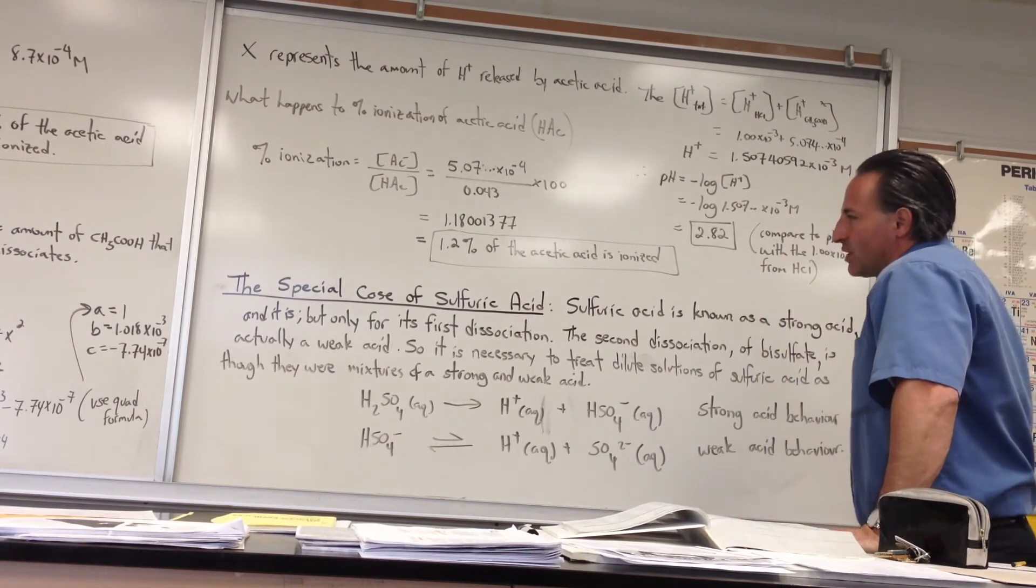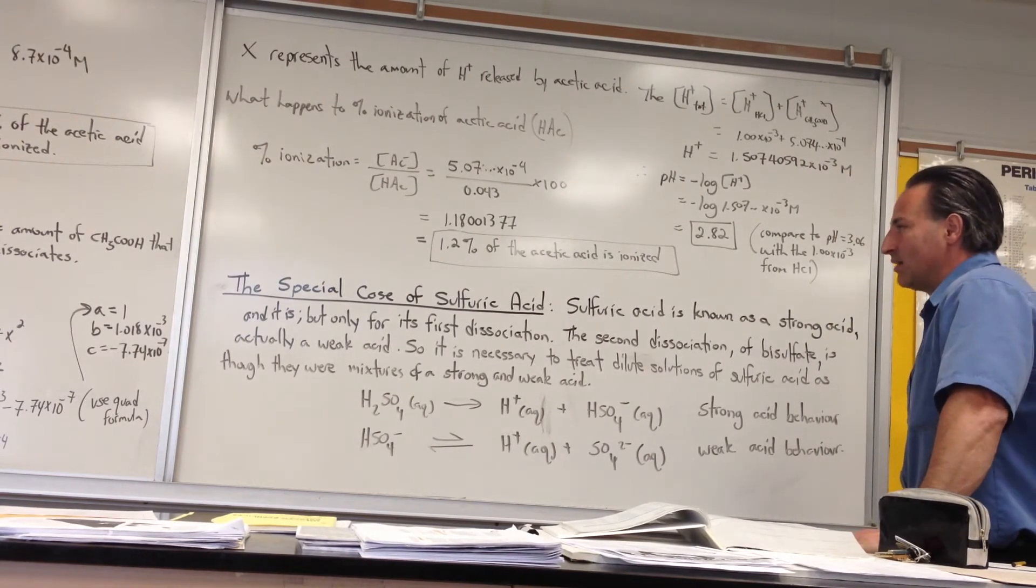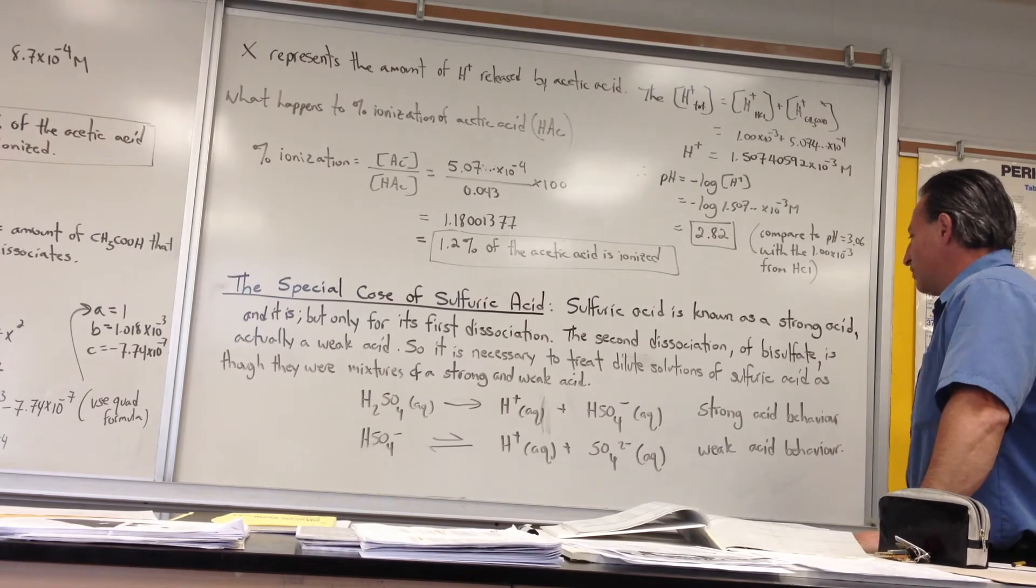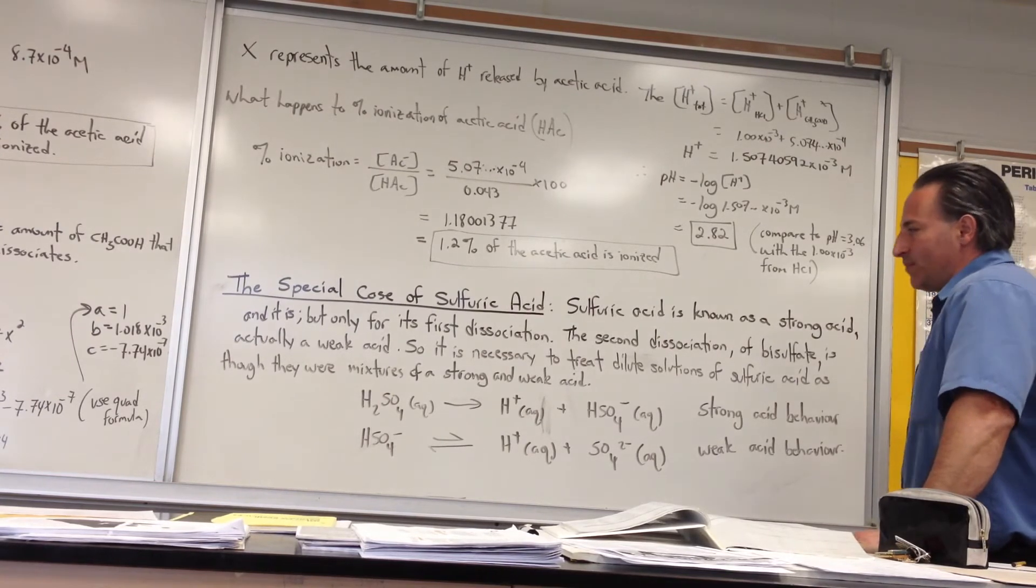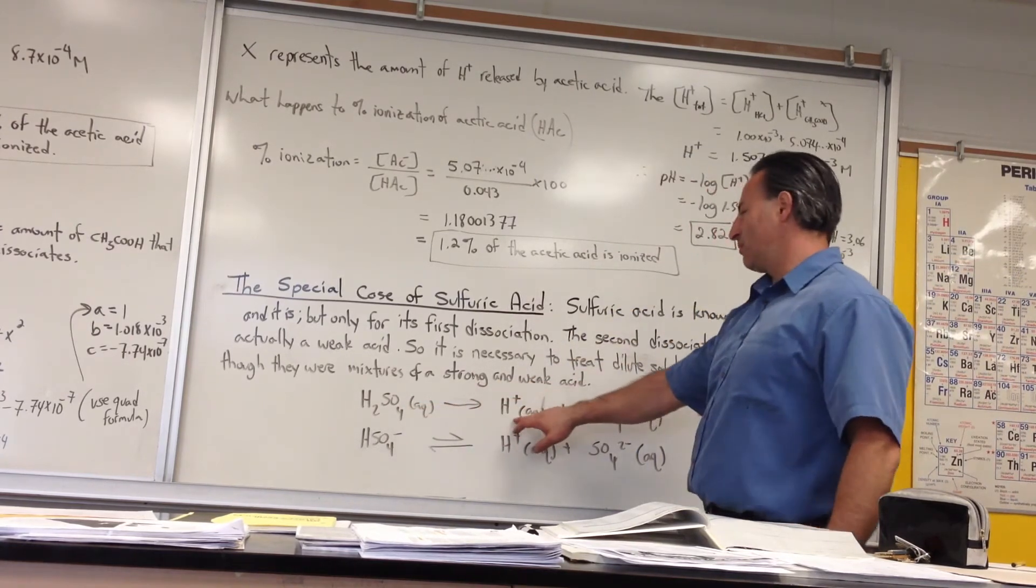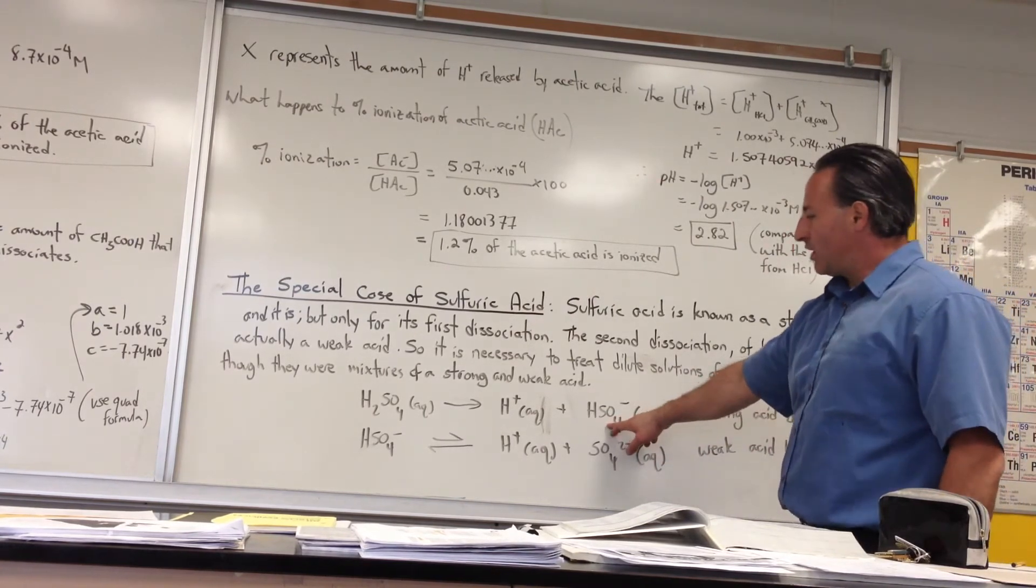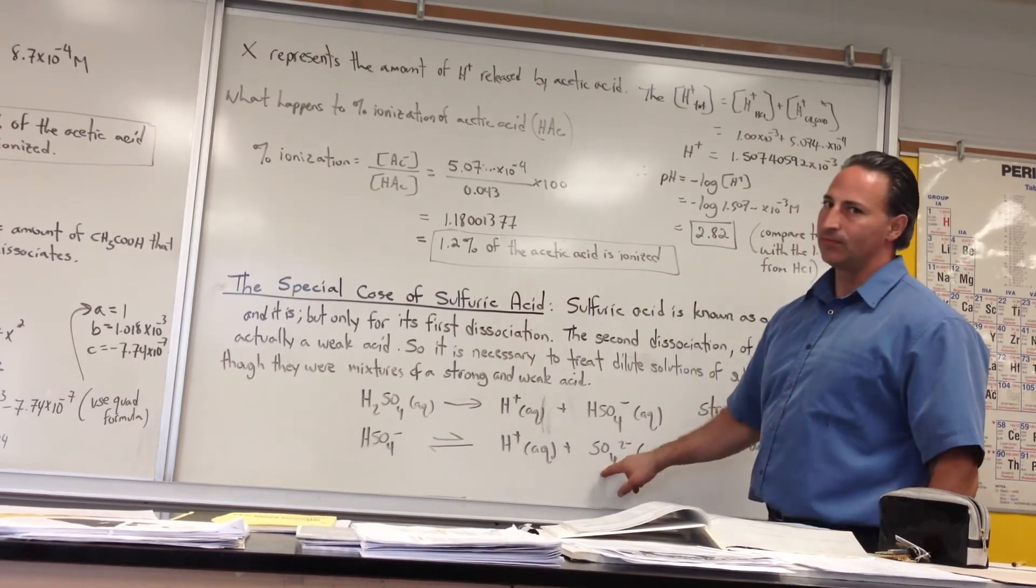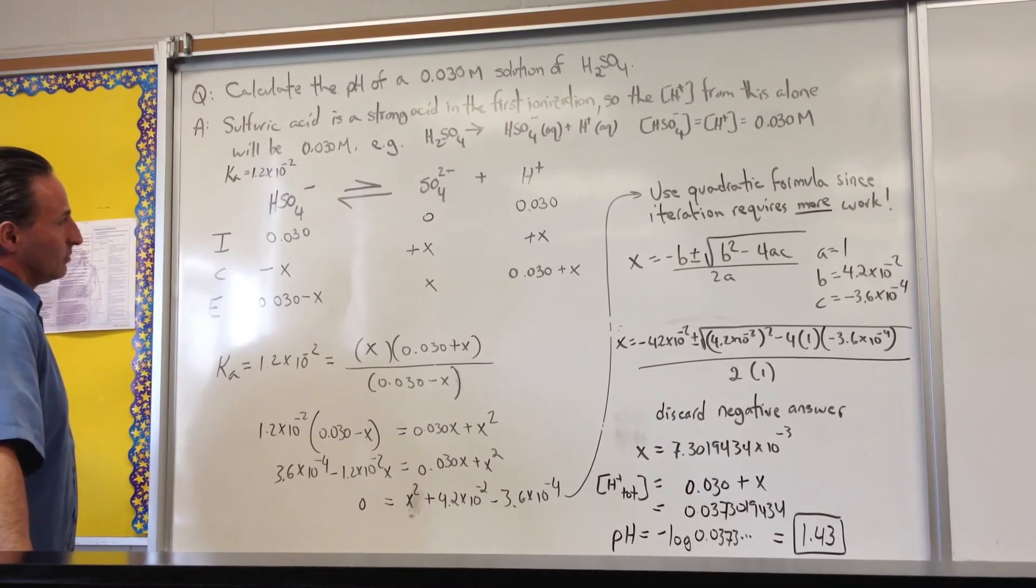The calculations involving sulfuric acid. I call it the special case of sulfuric acid because sulfuric acid is known as a strong acid, and it is, but only for its first dissociation. The second dissociation of bisulfate is actually a weak acid. So it's necessary to treat dilute solutions of sulfuric acid as mixtures of a strong and a weak acid. Your sulfuric acid dissociates 100% to form hydrogen ions and the bisulfate anion. That's strong acid behavior. But then the bisulfate anion also dissociates further to give you more hydrogen ions and the sulfate anion.